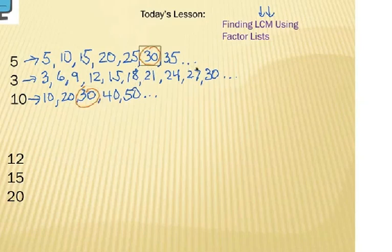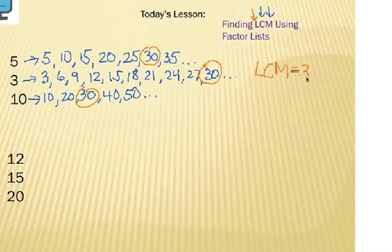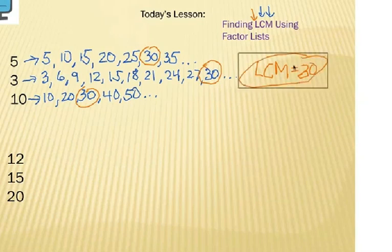30 is the common multiple. And finally, L stands for least or lowest. So what's the smallest number? The first number we come to that is the common multiple for those 5, 3, and 10 multiples. Well, obviously, that would be 30. That is actually the easiest way to remember how to find least common multiple. It's not always the most efficient, though. You can see how you might have to keep going for a while to eventually find the right multiple.